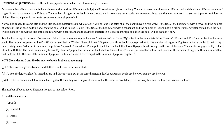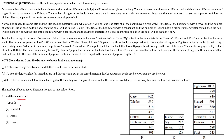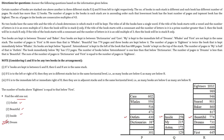The next question asks to find the odd one out. Looking at the figure, Outlet, Beautiful, and Inside are all on the same horizontal line. But Dreams is not. So the correct answer is option 4, Dreams.